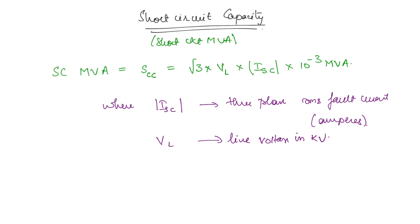If you do not want this confusion, you can write the voltage in volts and remove the 10 to the power minus 3, but the units you get will be volt-amperes. Short circuit capacity is usually measured in MVA, which is why we use this expression.